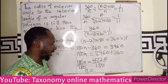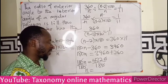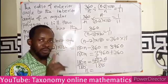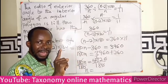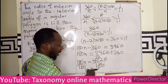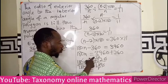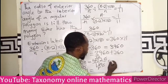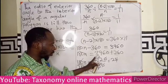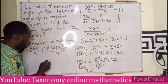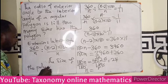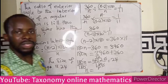Dividing 4320 by 180 — we can cancel common factors. 4320 divided by 180 gives 24. So n equals 24. Therefore, the polygon has 24 sides.